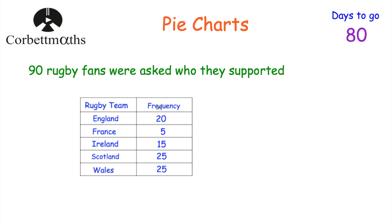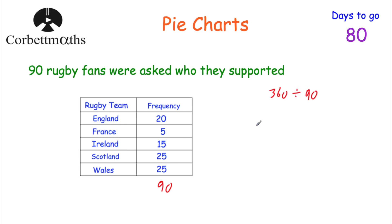We've got this table and we're going to draw a pie chart for it. The first step is to add up the frequencies to see how many people there are altogether. The question says there are 90 rugby fans, so when we add these numbers together we should get 90. And 20 plus 5 is 25, plus 15 is 40, plus 25 is 65, plus 25 is equal to 90. Fantastic.